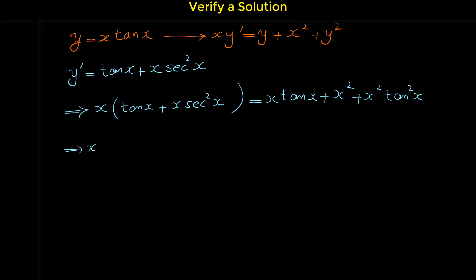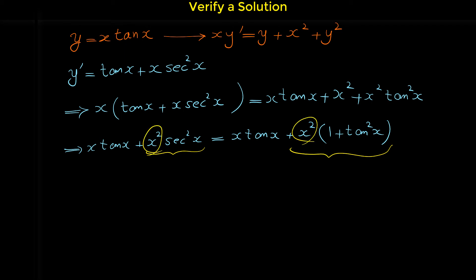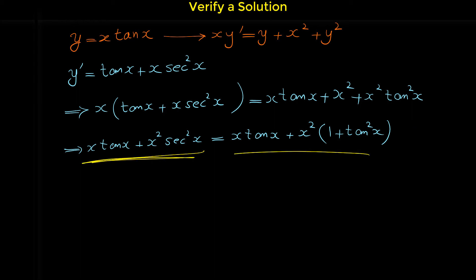Multiplying x into the bracket gives x tangent x plus x squared secant squared x on the left side. On the right side we have x tangent x plus x squared plus y squared. Since y squared equals x squared tangent squared x, factoring x squared from the last two terms gives x squared times (1 plus tangent squared x). Since 1 plus tangent squared x equals secant squared x, both sides are equal, completing the proof.